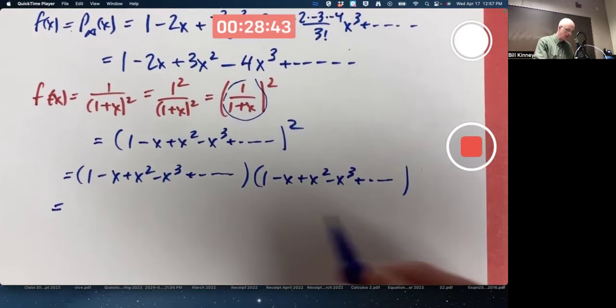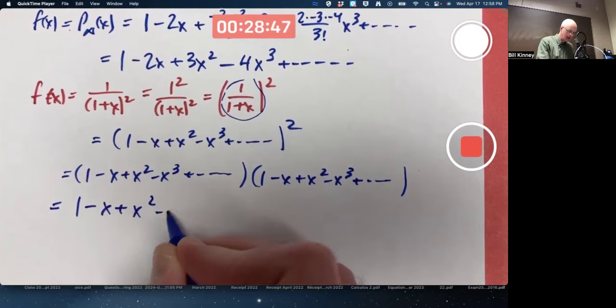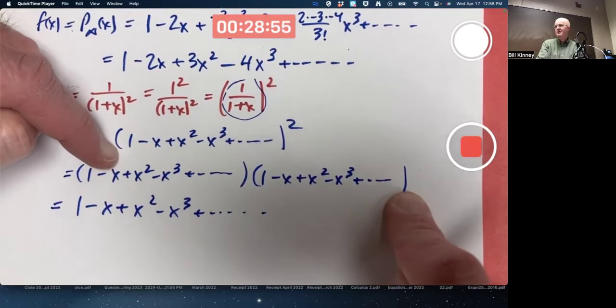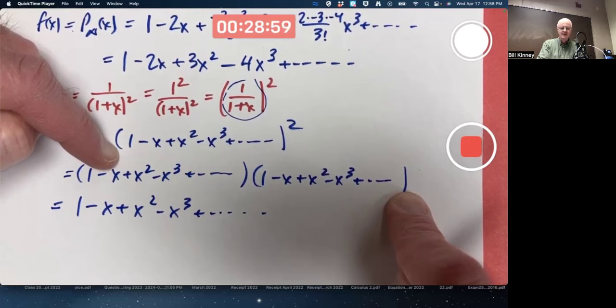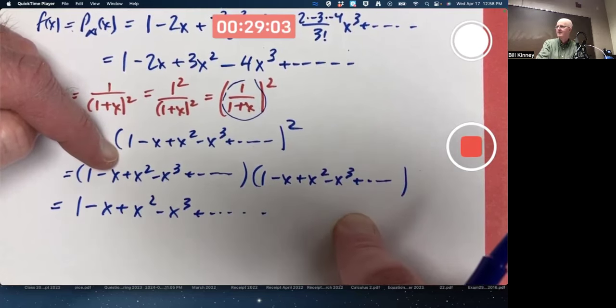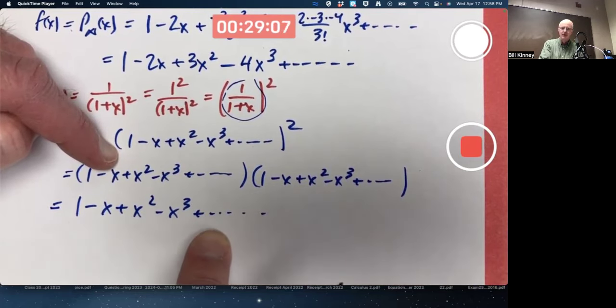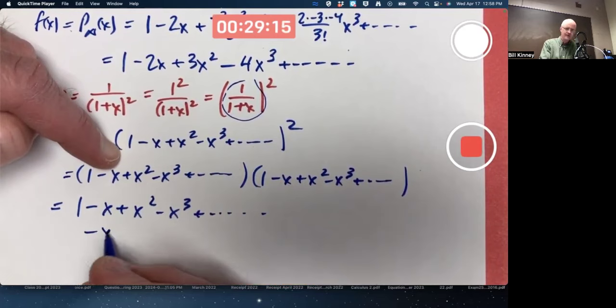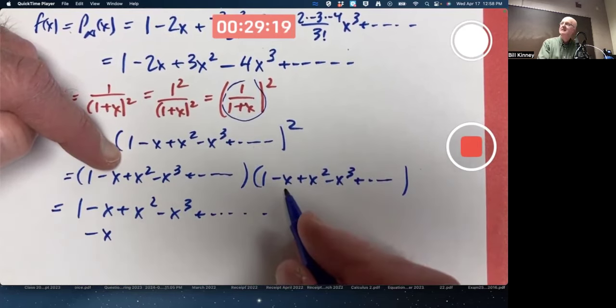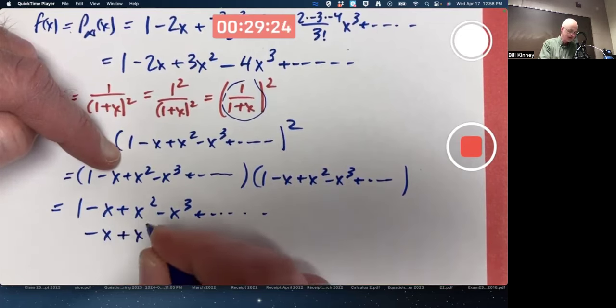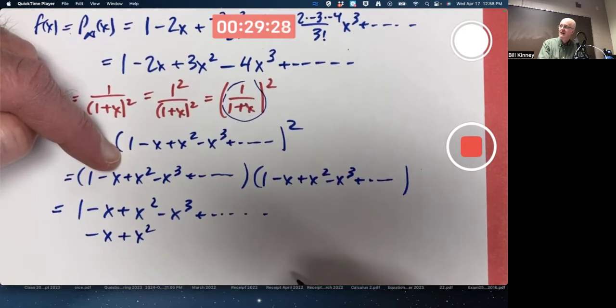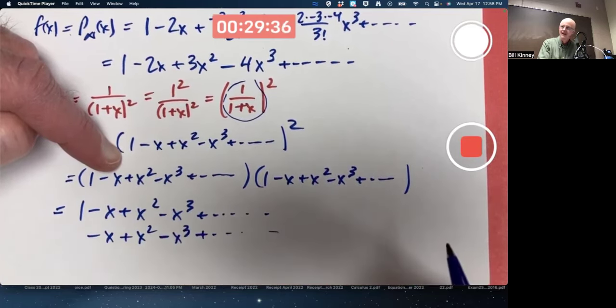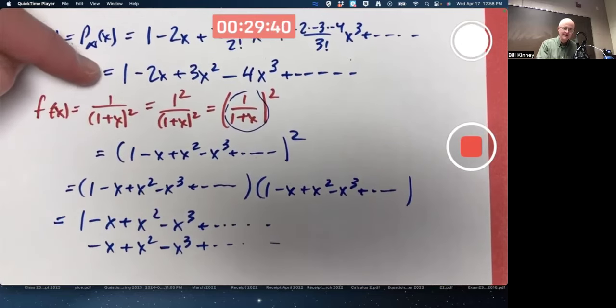Start with the first term there, 1. Multiply it times every term there. That's easy. I get every term over there. Then go to the next term on the left, negative x. Multiply it times every term over there. And where should I put the answer? Over here, you could, but it's more fun and easier to not make a mistake in the end by putting it under this one and matching up like terms vertically. Negative x times 1 is negative x. Put it under the other negative x. Negative x times negative x is positive x squared. Put it under the other positive x squared. Maybe you see where this is going. Negative x times x squared is negative x cubed. Put it under the other negative x cubed.